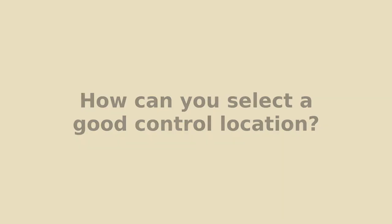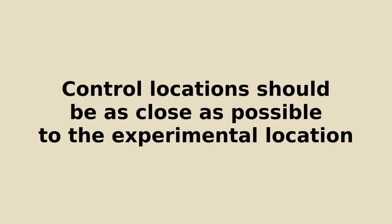The one thing we think is important is that firstly the control location should ideally be as close as possible to the experimental location to make it more difficult for the subjects and maybe the experimenter to know which condition is being run.